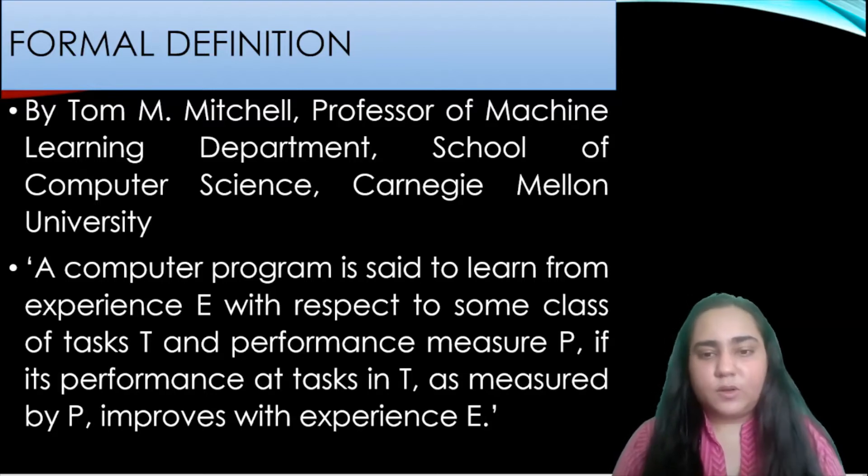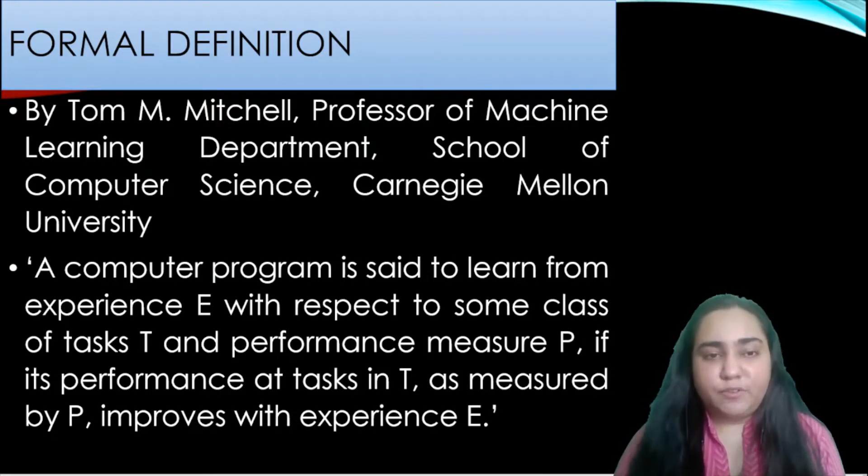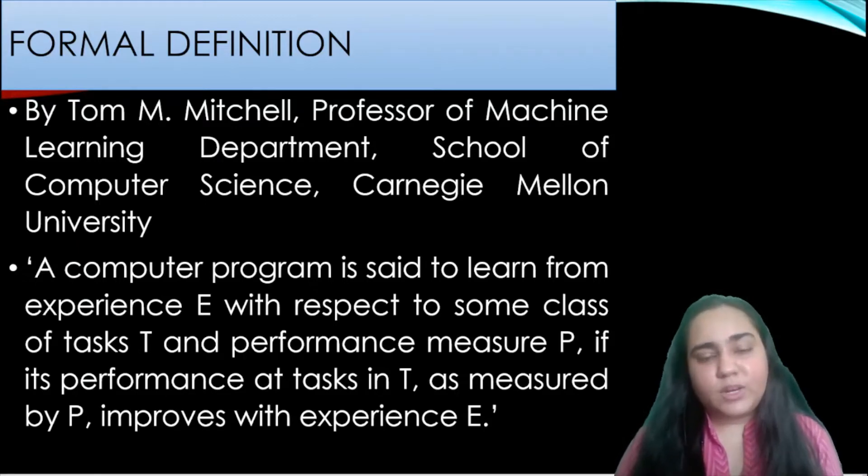So I know it's a lot of E, T and P but if you just look at the definition all it's trying to say is that with experience the computer program is able to do better at those tasks given. Just like human beings with experience we are able to do our tasks better more efficiently. So there are three things here experience tasks and performance. Initially because there is no experience the performance of the program while doing those tasks is not so good but then when experience is involved then the performance increases.